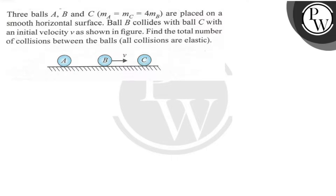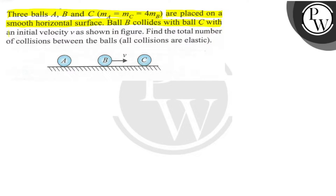Three balls A, B, and C of mass MA equal to MC equal to four times the mass of B are placed on a smooth horizontal surface. Ball B collides with C with a velocity V as shown in the figure. Find the total number of collisions between the balls, given that all the collisions are elastic.